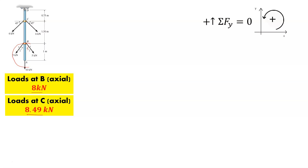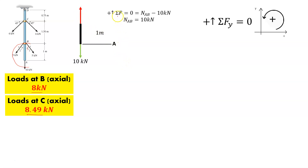Starting from the bottom end at A: we have the first applied load of 10 kilonewtons and take a slice there to find the internal reaction. Sum of forces equals zero, so the internal normal load N_AB minus 10 kilonewtons equals zero. That internal load is 10 kilonewtons acting upward in the positive direction.